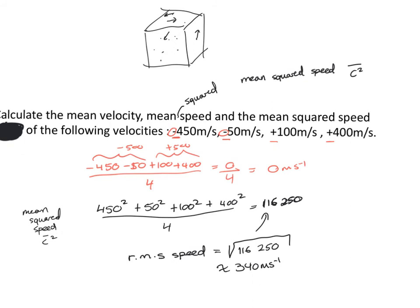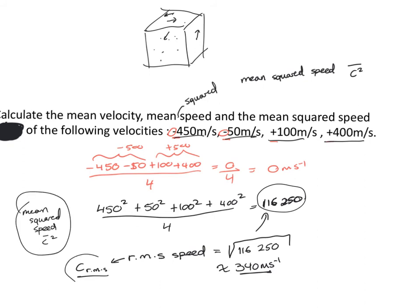The root mean squared speed c_RMS is approximately 340 m/s in this example, not the same as the mean speed of 250 m/s. We are interested in c_RMS. A common mistake in exams is confusing these different speed values — mean speed, mean squared speed c̄², and root mean squared speed c_RMS. Be clear about which to use and whether you need to square or square-root a value.